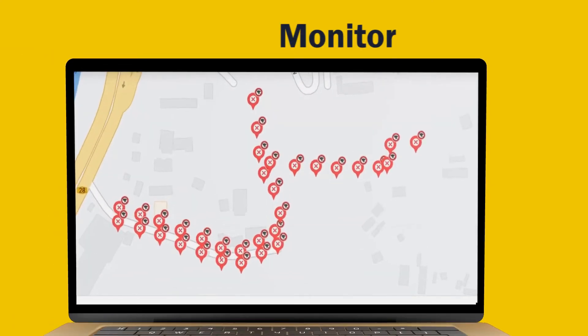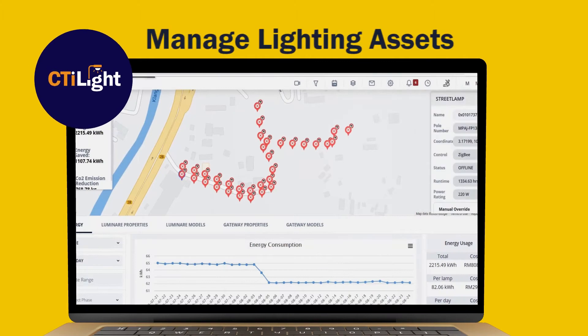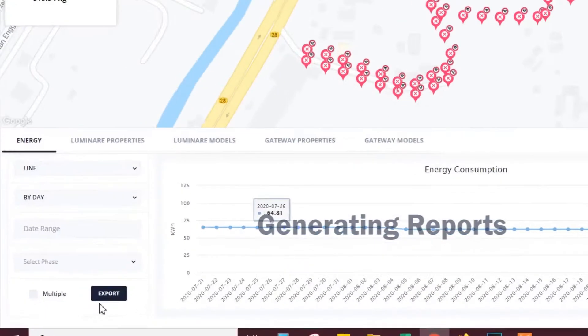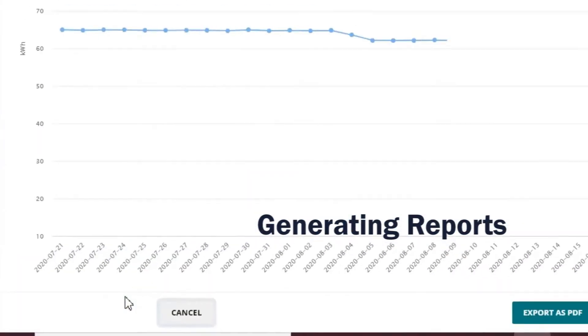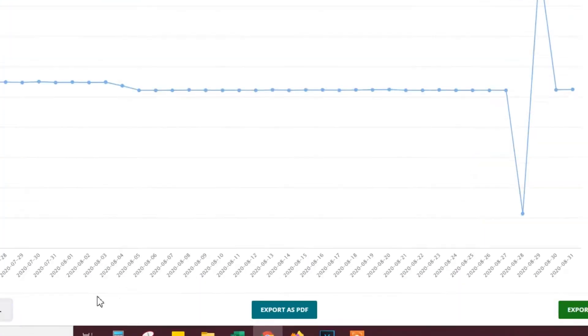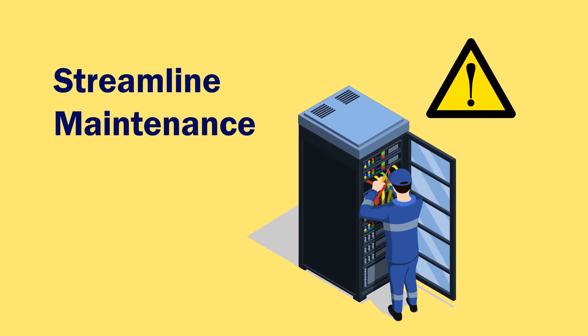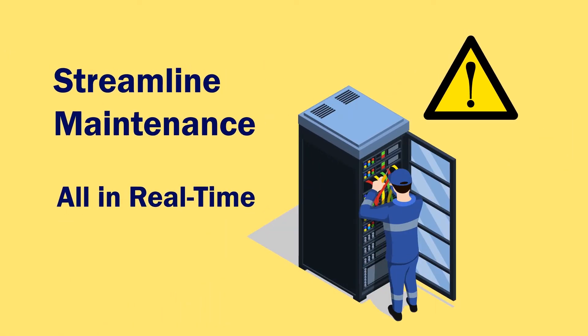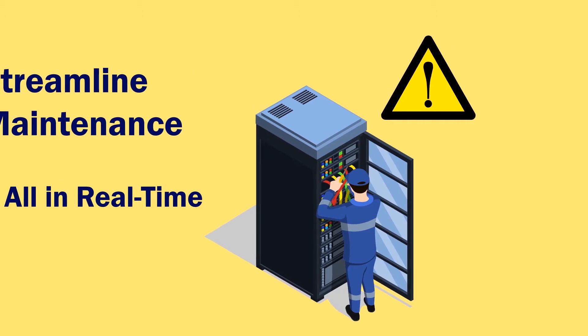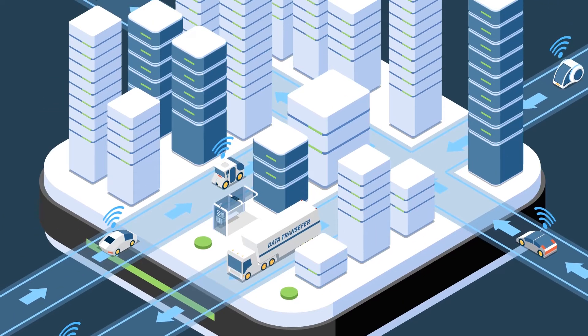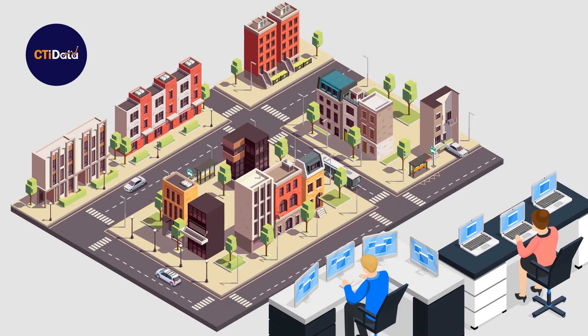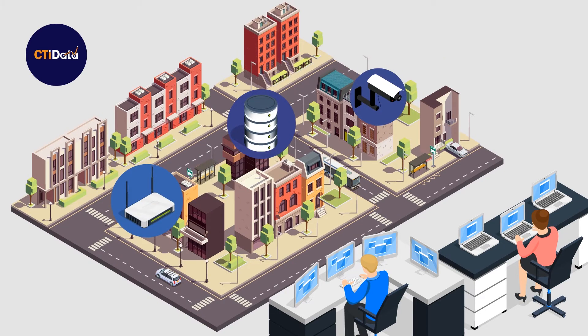City Light allows you to monitor and manage your lighting assets while generating reports, detecting faults, and streamlining maintenance workflow, all in real time from a secured and centralised cloud-based platform.